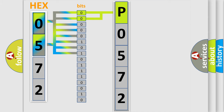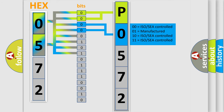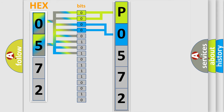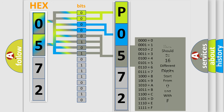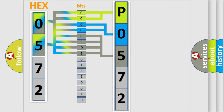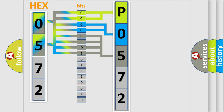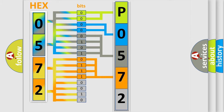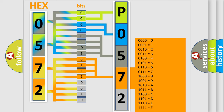The next two bits determine the second character. The last bits of the first byte define the third character of the code. The second byte is composed of a combination of eight bits. The first four bits determine the fourth character of the code, and the combination of the last four bits defines the fifth character.